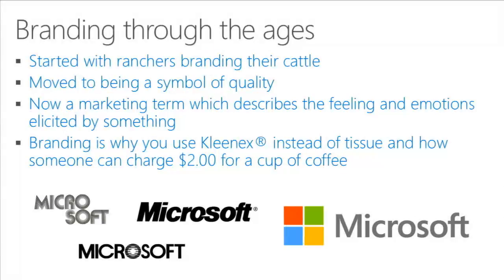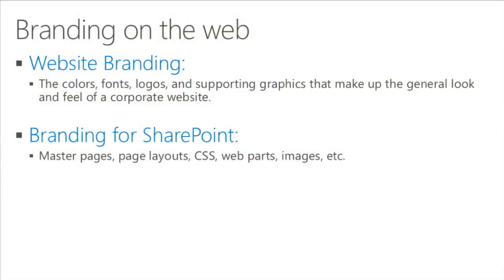We have some examples: it's why you call something a Kleenex instead of a tissue, why you pay so much for a cup of coffee, or use a Tylenol instead of acetaminophen. Every company you all work for has a very important association with their brand, and they want to make sure — especially when making their websites — that those feelings and emotions are coming through their web properties. When you think about branding on a website, you're talking about colors, fonts, logos, graphics — all the stuff that generally goes into the UI.